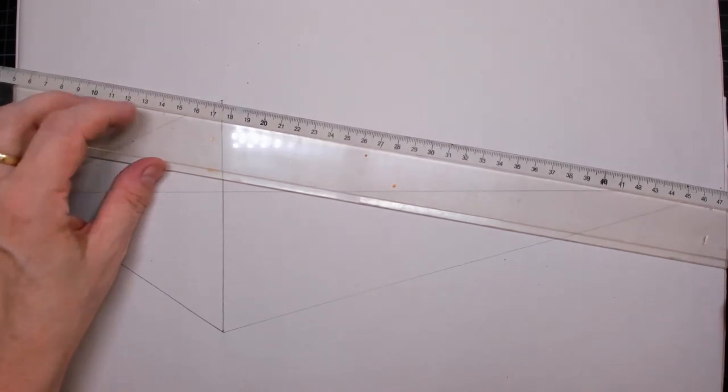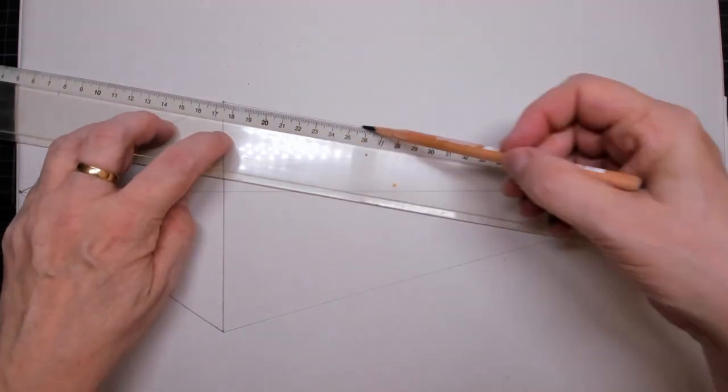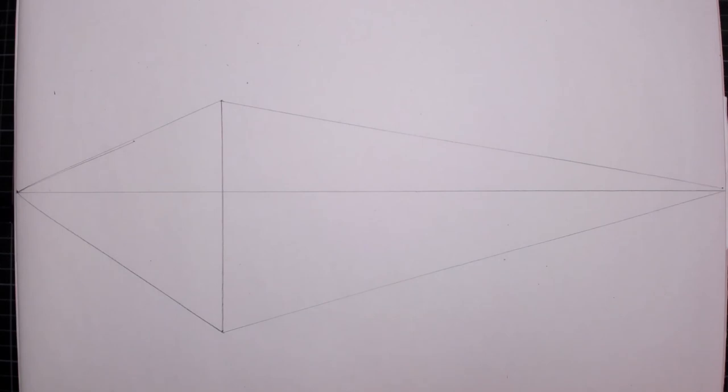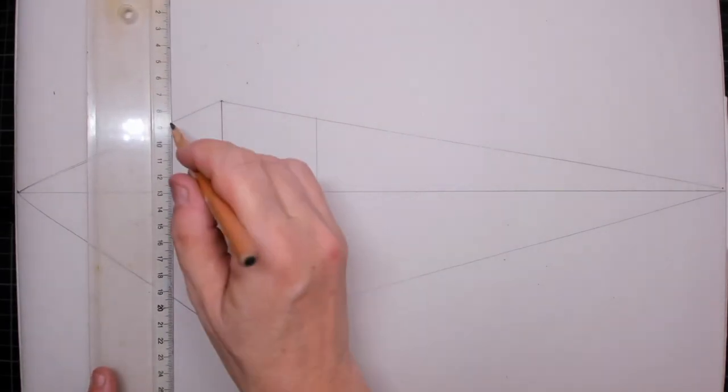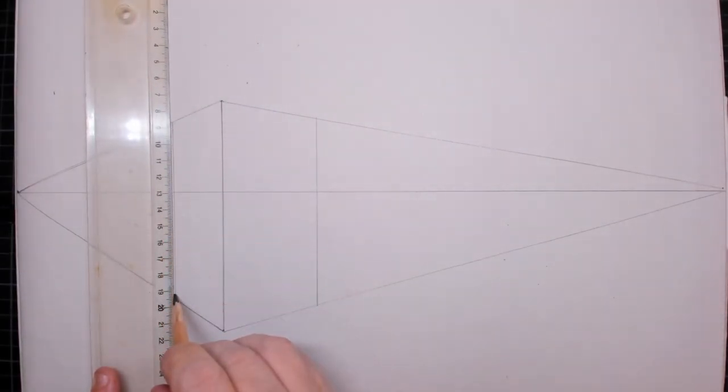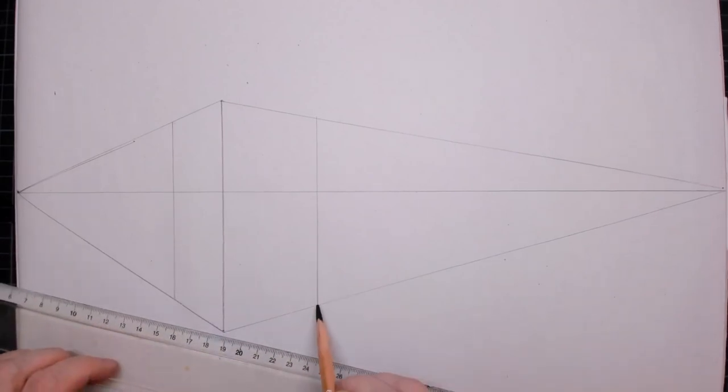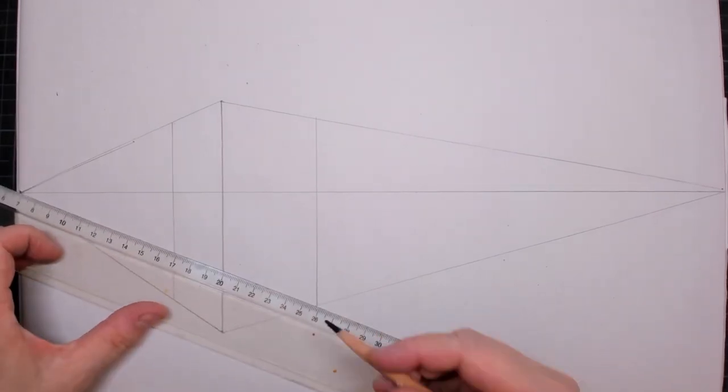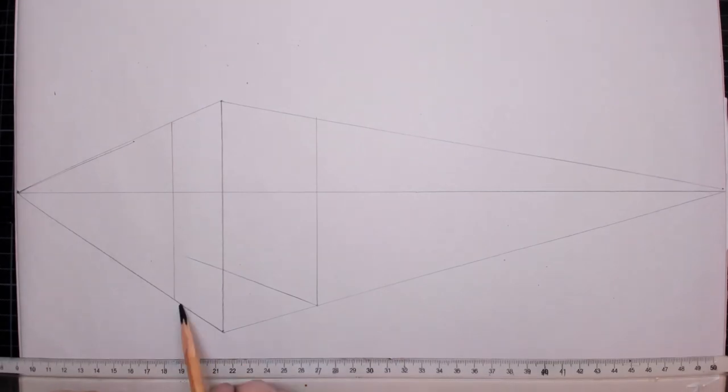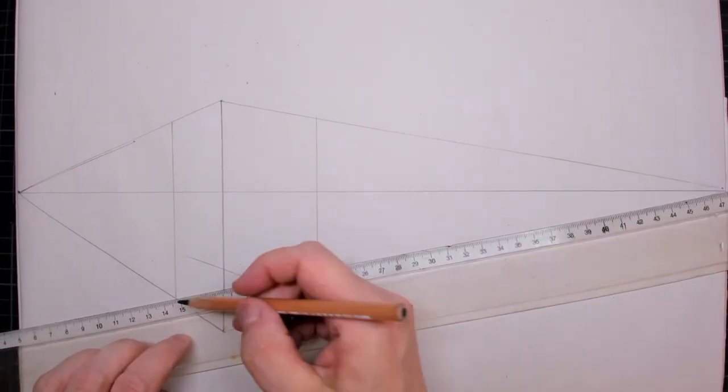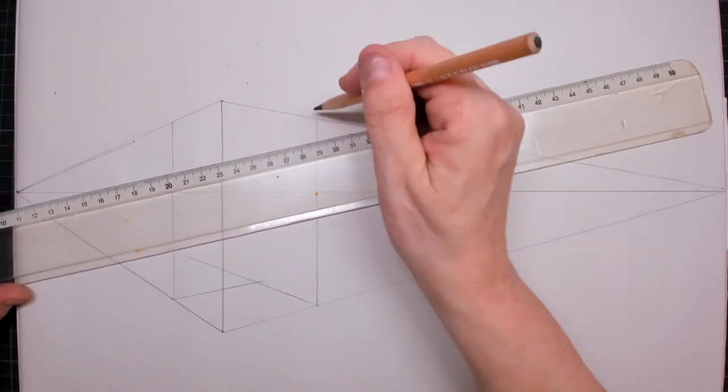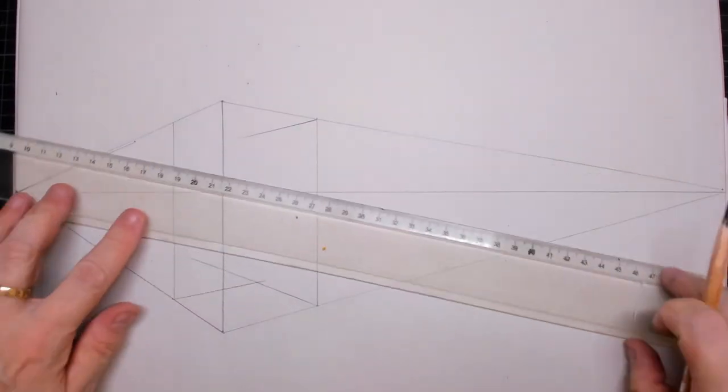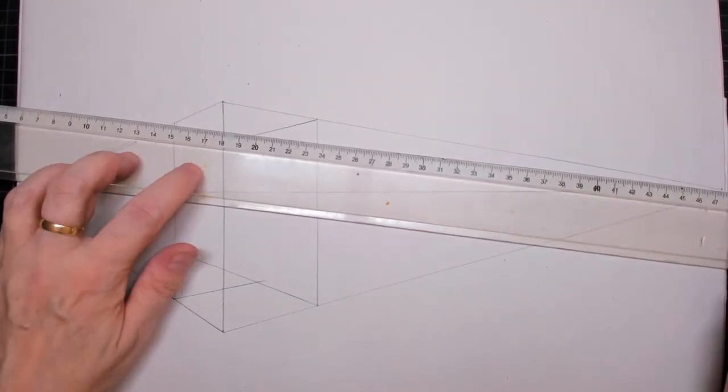Within that cube we are going to create the hourglass. Put in two other lines to decide how big your cube is going to be, I'm simply eyeballing this. Then connect those lines also to the left and right vanishing points, creating an actual cube which is in perspective, totally correct.